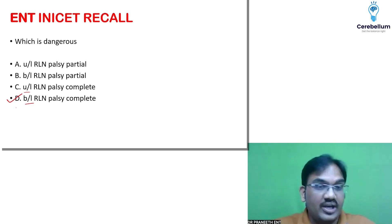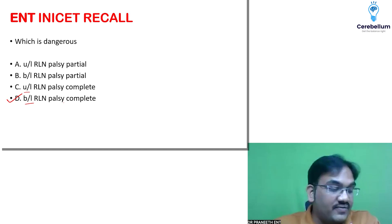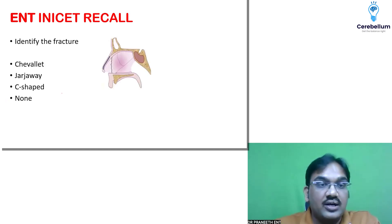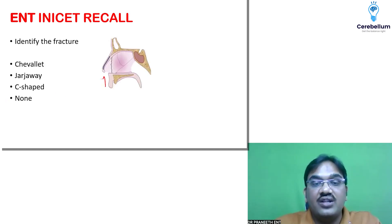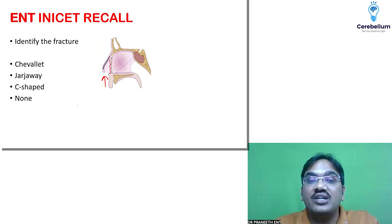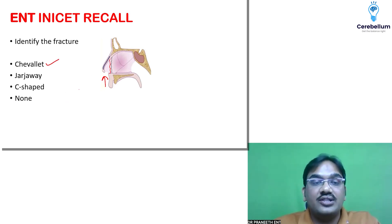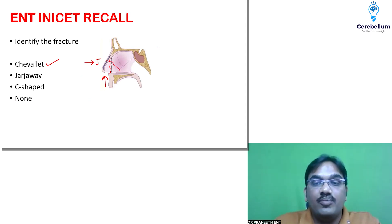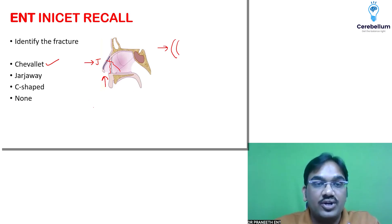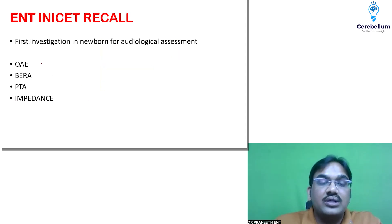Now identify the fracture type. If the blow is from below, the fracture line will pass vertically — this is a Chevalet fracture. If the blow is from the front, that is a Chariot fracture, which will come like this. If the blow is from one side, the dorsum will deviate in a C-shape.